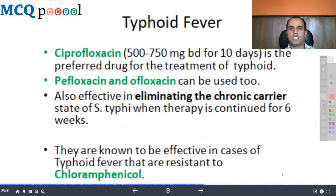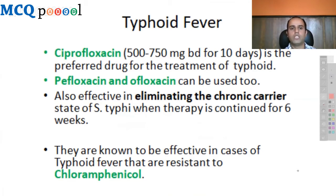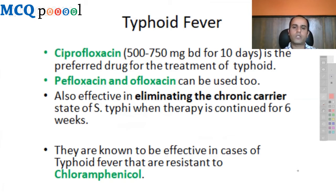For typhoid fever, ciprofloxacin 500–750 mg BD for 10 days is the preferred drug. Pefloxacin and ofloxacin can also be used. It is effective in eliminating the carrier state of Salmonella typhi when therapy is continued for six weeks, and is effective against typhoid cases resistant to chloramphenicol.